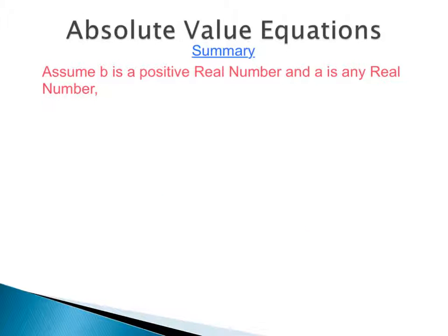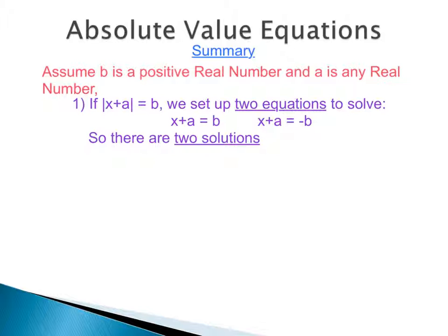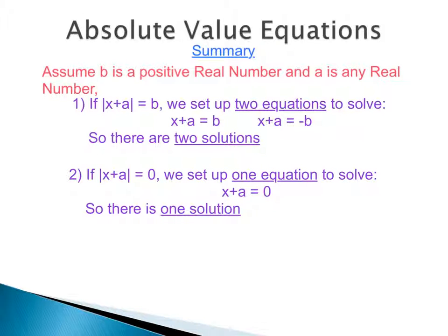Quick summary of the three examples: If b is a positive real number and a is any real number — if the absolute value of x plus a equals b (a positive number), we set up two equations and get two solutions: x plus a equals b and x plus a equals negative b. If the absolute value of x plus a equals 0, we set up one equation and get one solution: x plus a equals 0. If the absolute value of x plus a equals negative b, there is no solution, because an absolute value can never equal a negative number.